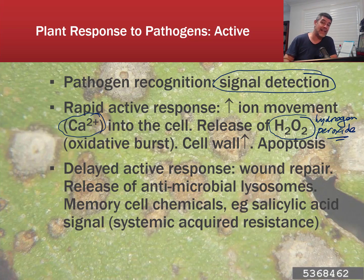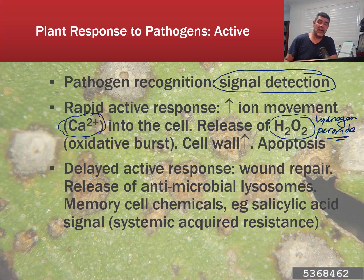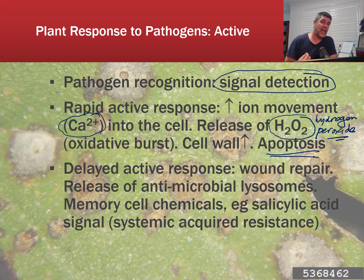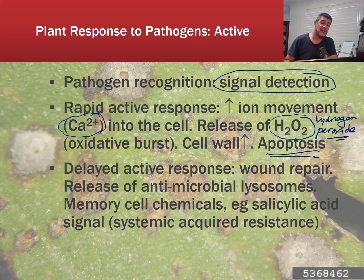Bacteria prefer to be living in anaerobic conditions, so the release of oxygen often disrupts their growth patterns. We also talked about an increase in the strength or reinforcement of cell walls. And of course apoptosis is another important process — it's a programmed cell death. If cells have become infected with pathogens, they will often release certain chemicals that start the process of cell death, meaning the contents of the cell, including the pathogen, are no longer available and need to be either released or reabsorbed.